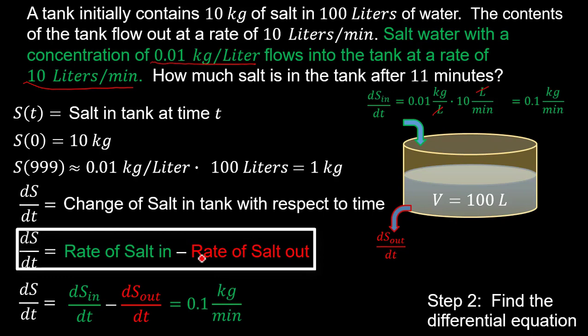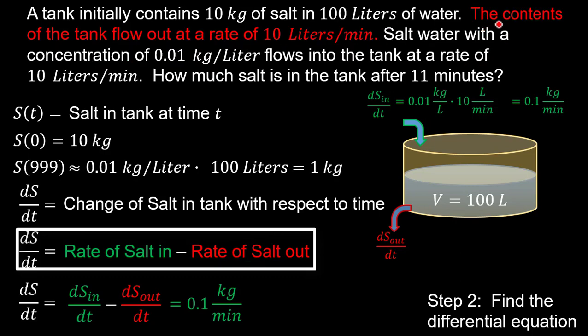Finding the rate of salt going out is a bit trickier. We're told the contents flow out at 10 liters per minute, but we're not given a concentration this time. That's because the amount of salt in the tank is actually changing — which is why we need a differential equation. DSDT depends on dS_out/dT, but dS_out/dT depends on S, the current salt concentration. The equation self-references itself, requiring calculus to solve.